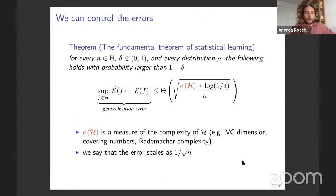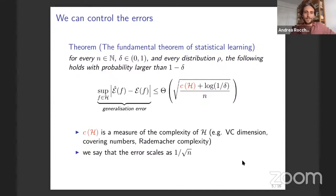An audience member asks why having a minimizer is an assumption. The speaker clarifies: if your hypothesis class is infinitely large, you might not have an infimum of that object. In practice, with finite numerical precision, you always do — but this is a theoretical formality.